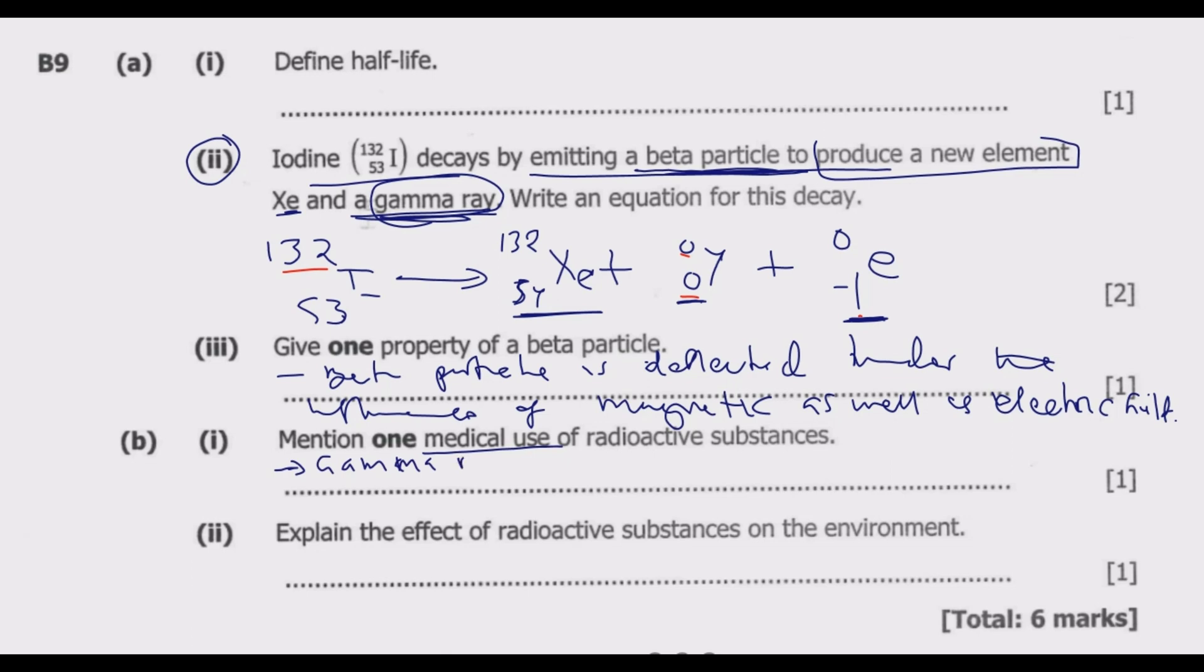So a gamma ray, which is a gamma particle, is used to treat cancer or used in the treatment of cancer. Because they kill cancerous cells.